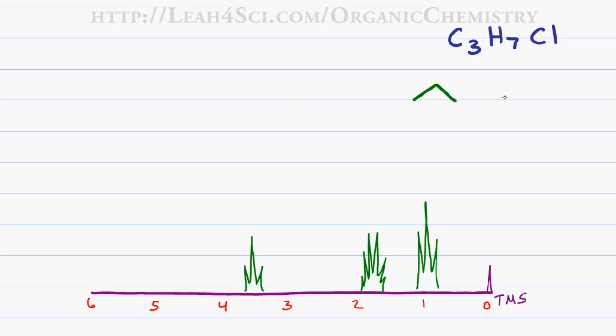Three carbons gives me a propyl chain and I can choose to put the chlorine on the terminal carbon or the central carbon. However, let's assume that we do not know how to guess and instead we'll go through the steps I've shown you to analyze every peak and how it relates to the molecule.